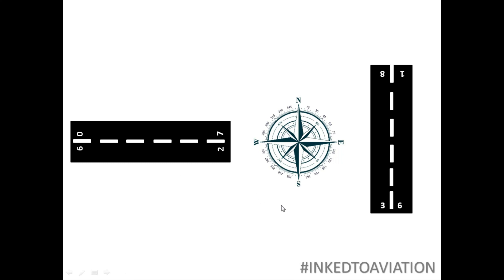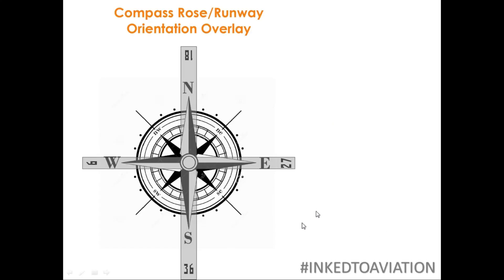For the same airport, if I want to construct a runway in this particular orientation, it is going to be 18 and 36. Now what I want you to do is superimpose the following three images. If you see this exactly, this is my runway 09 pointing west and runway 27 pointing east.